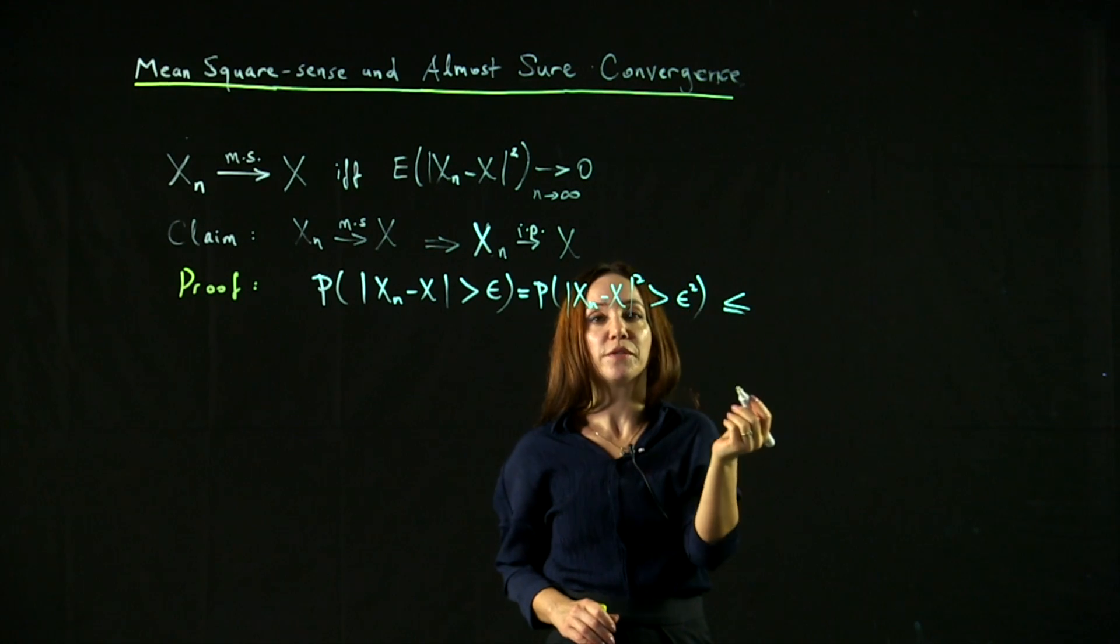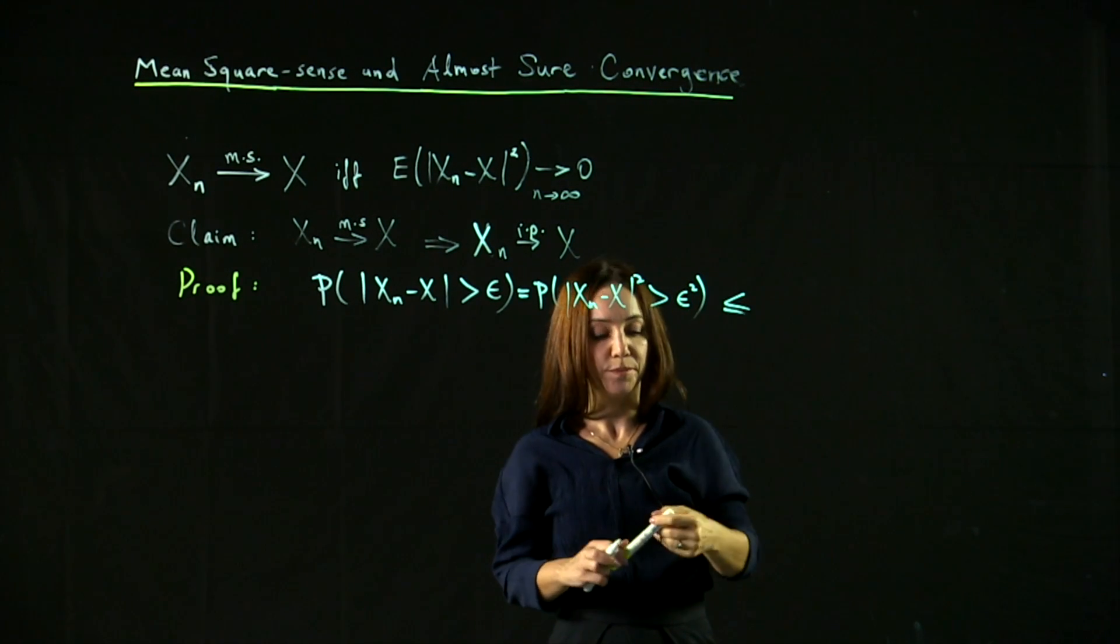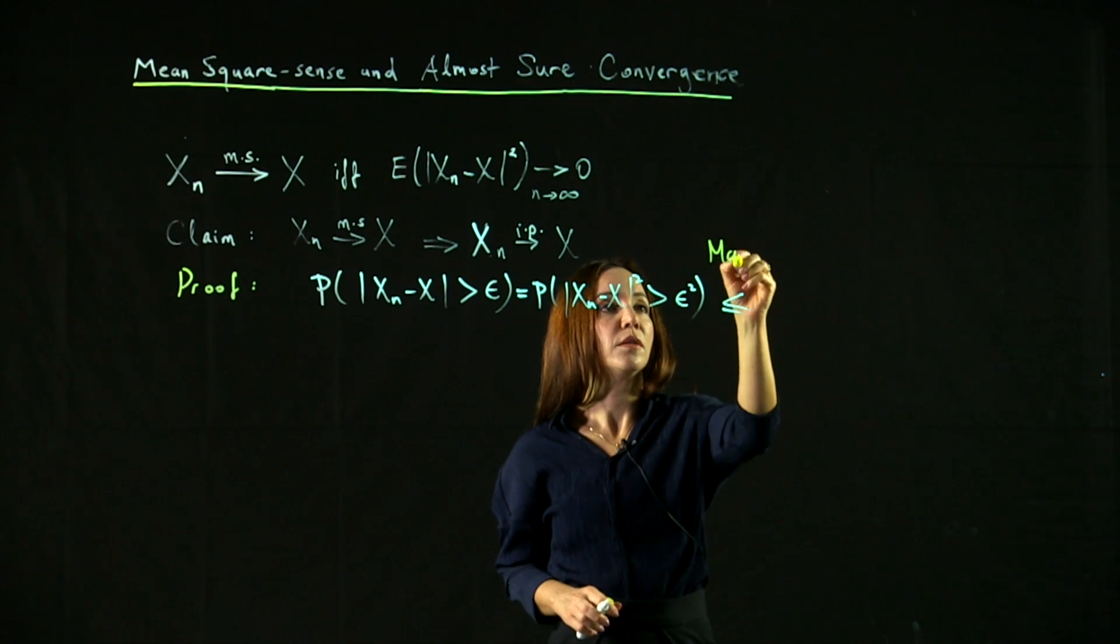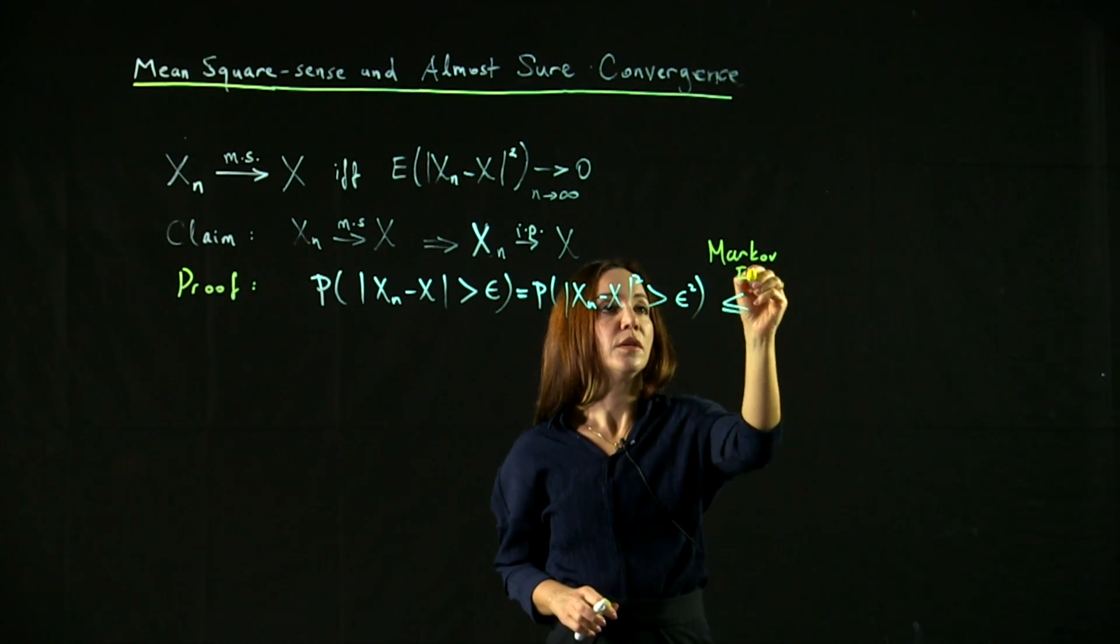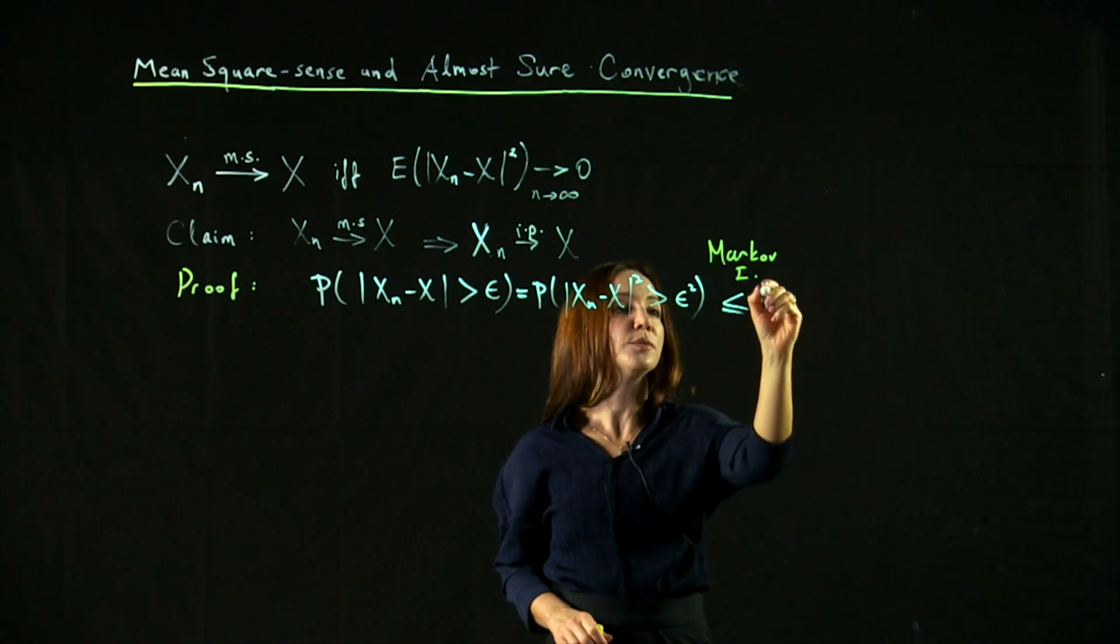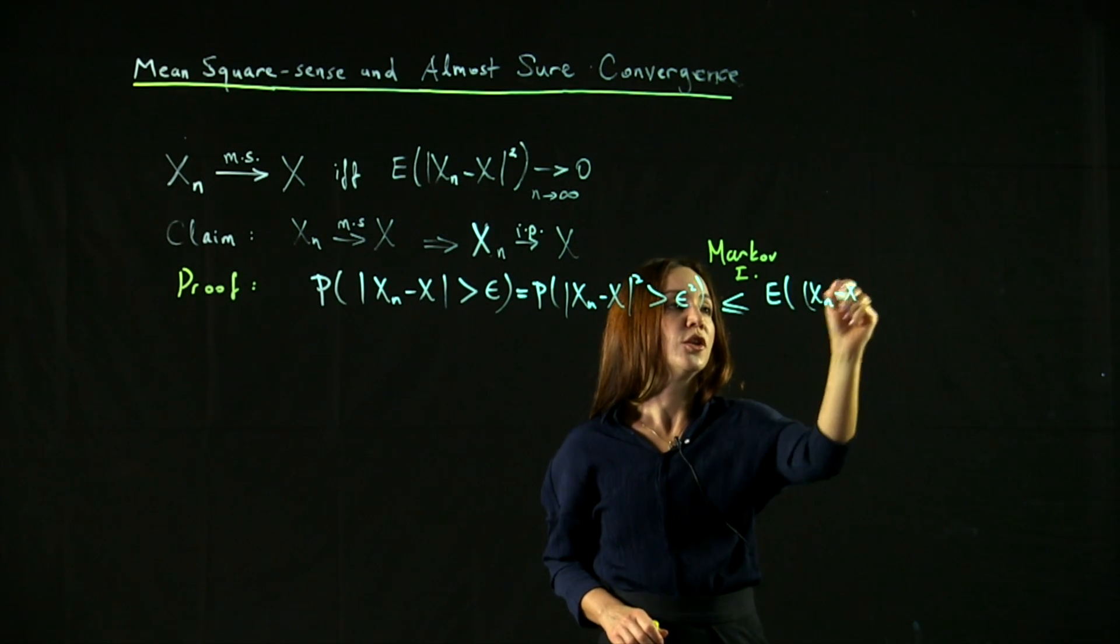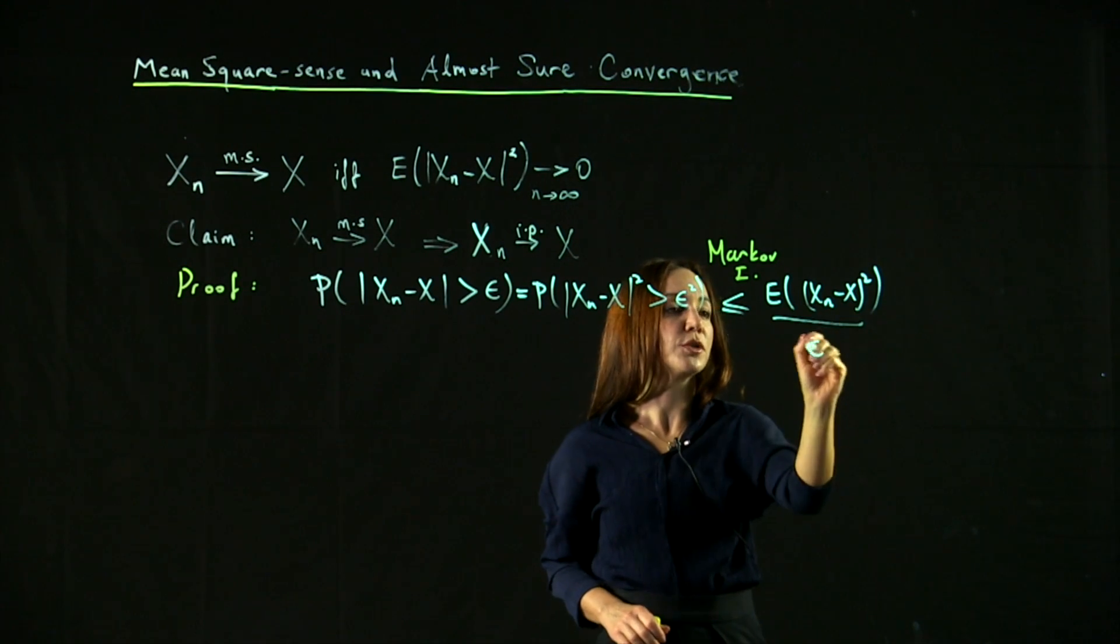we don't need the Chebyshev inequality here. I'm sorry, you can use Markov inequality and say that this is upper bounded by the expectation of xn minus x squared divided by y squared.